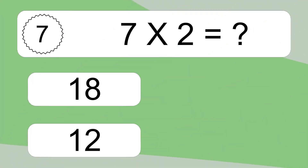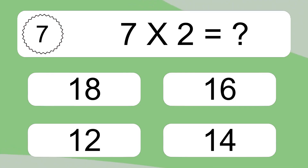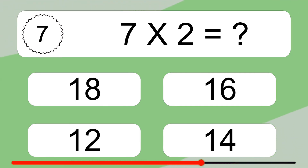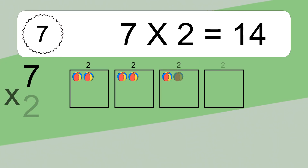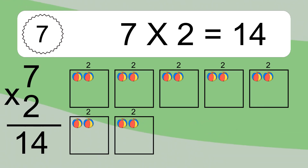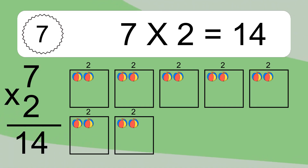7 times 2 equals what? 7 times 2 equals 14. We have 7 boxes, and each box has 2 colorful balls inside. If you count all the balls in all the boxes together, you will have 7 times 2 balls. This equals 14 balls.